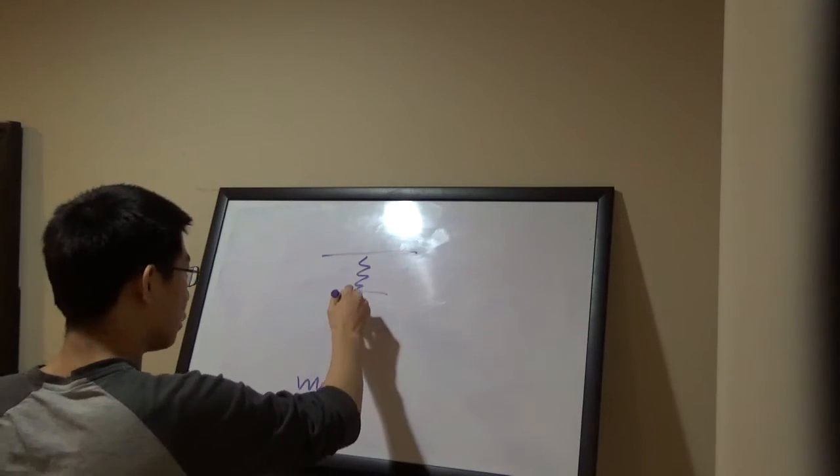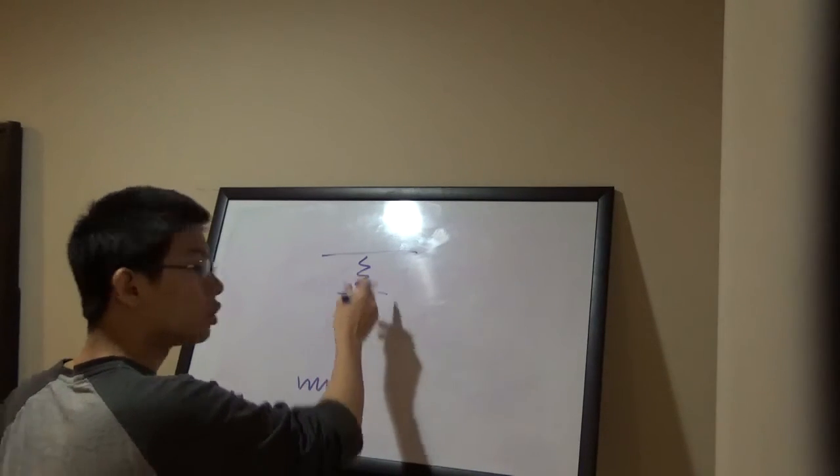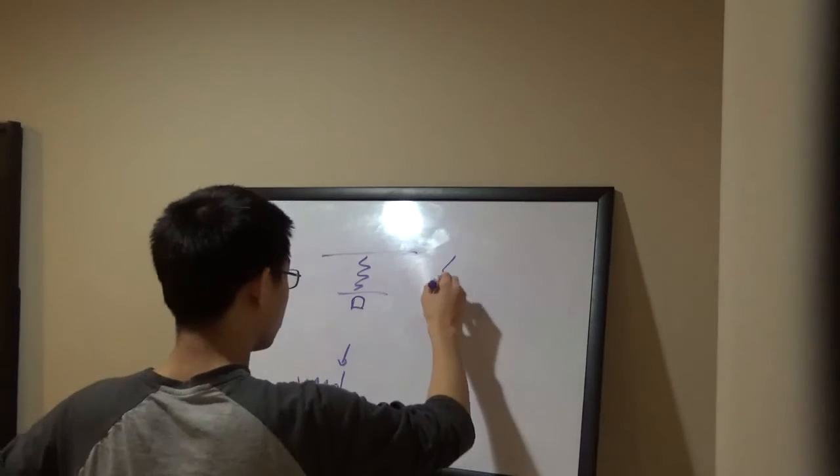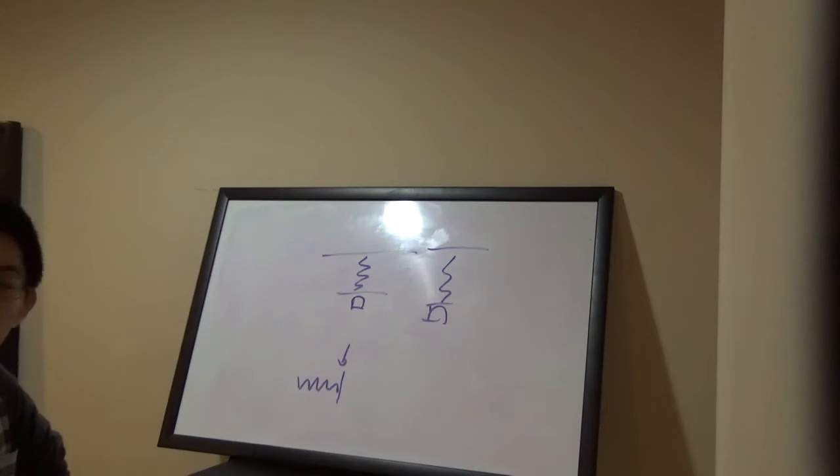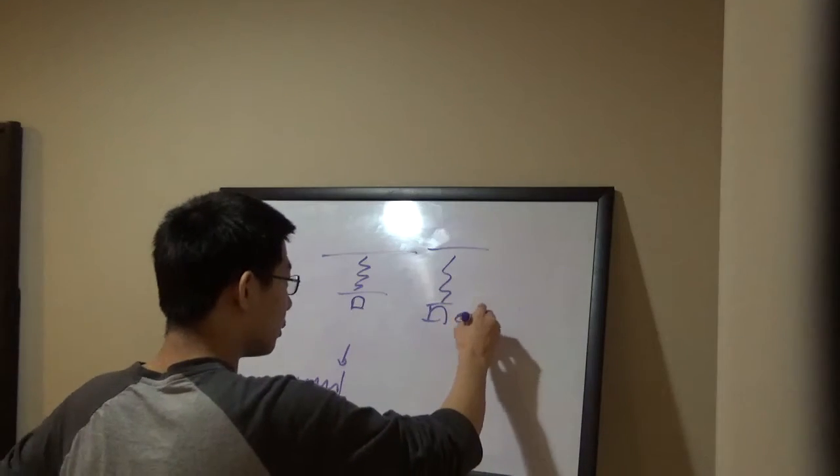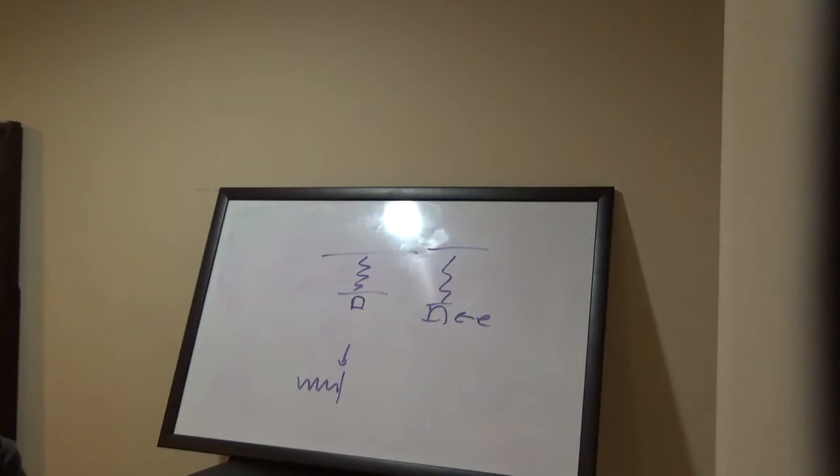If I decide to hang a weight here, sure, the spring's going to extend and give some new equilibrium position. It's still going to follow Hooke's law. This is our new equilibrium. We might have had a new equilibrium, but it still follows Hooke's law.